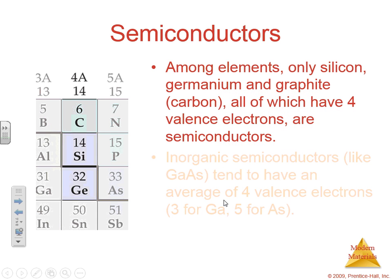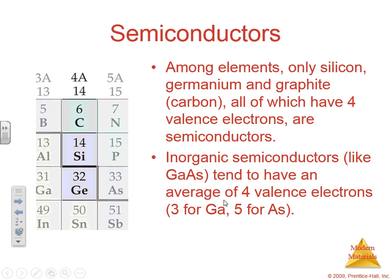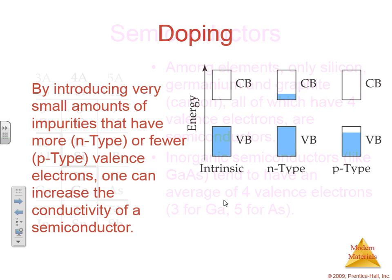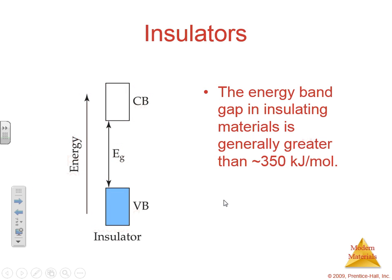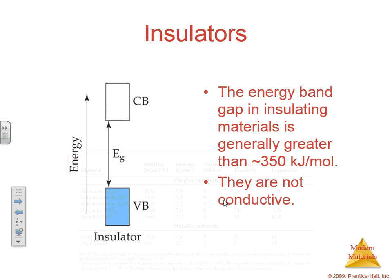When we talk about semiconductors, a handful of elements are semiconductors: silicon, germanium, and graphite, which is carbon. We're not going to talk about doping. This shows insulators right here.